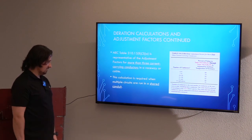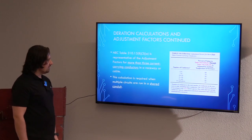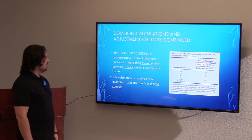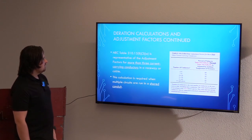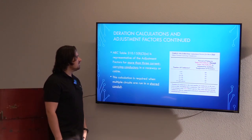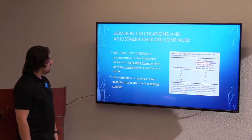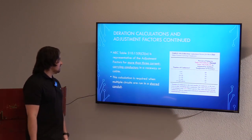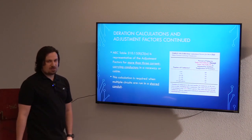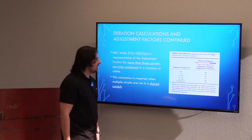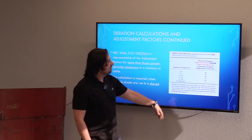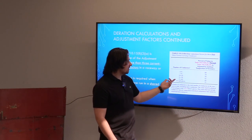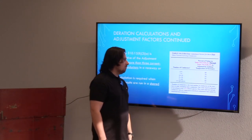The second and most common instance where we'll use a deration calculation is when we have more than three current-carrying conductors in a raceway or cable. NEC table 310.15 B3A is representative of those adjustments. Another way to say that: this calculation is required when multiple circuits are run in a shared conduit. Depending on the number of conductors, you'll have to derate by a certain percentage, and as we increase the number of conductors in a conduit, we have to derate more and more.